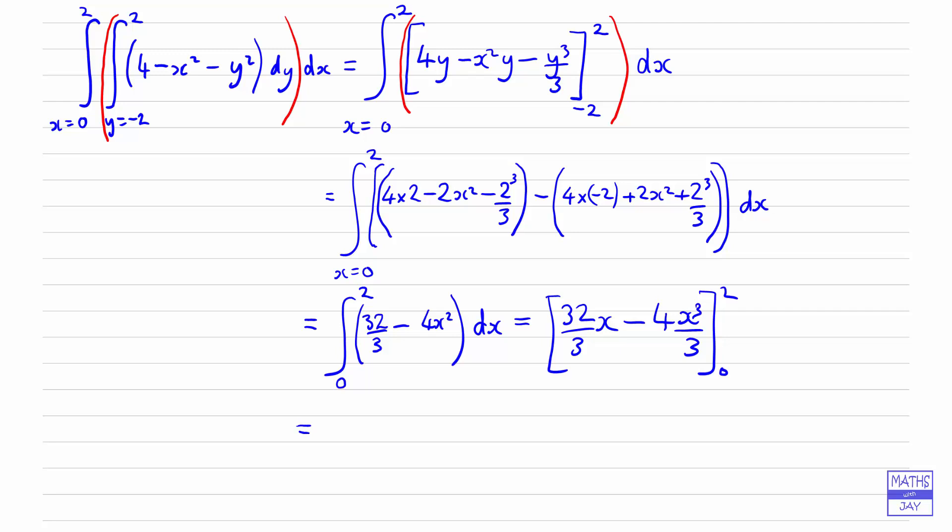So we end up with 32 times 2 over 3, minus 4 times 2 cubed, so 4 times 8, also over 3. So 32 times 2 minus 32 is 32. So that's 32 over 3.